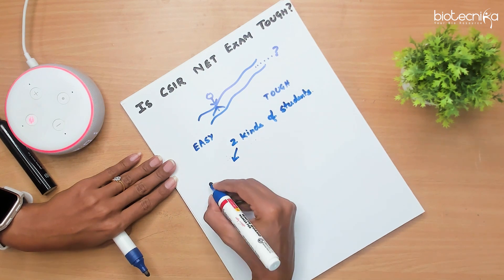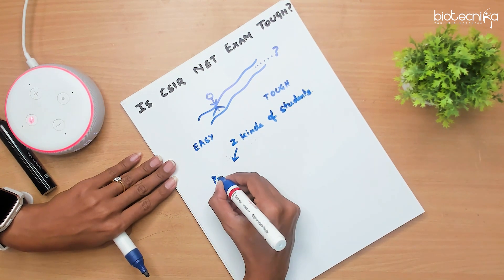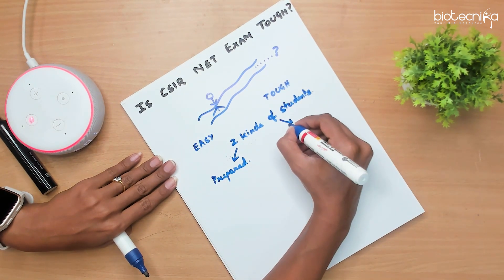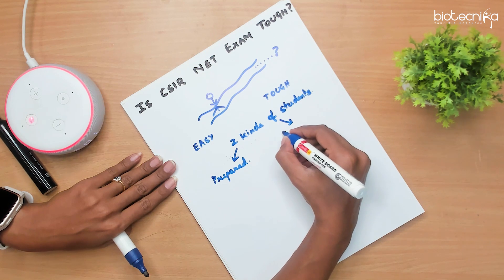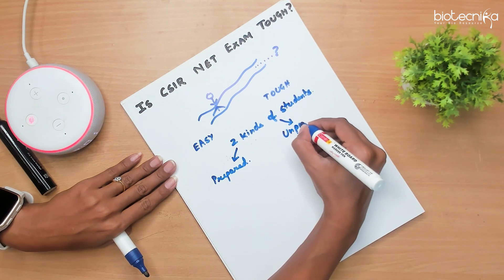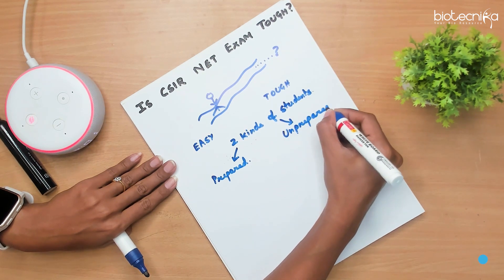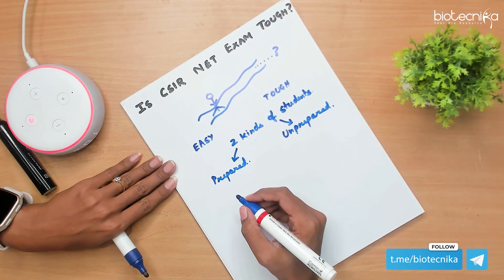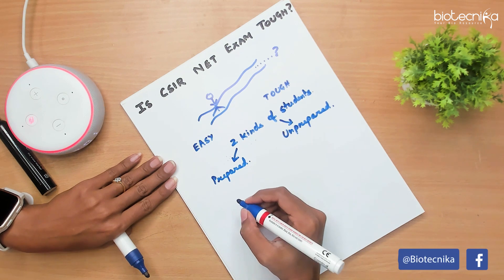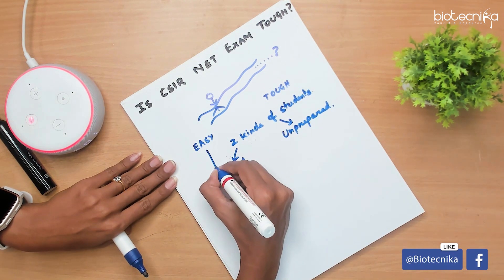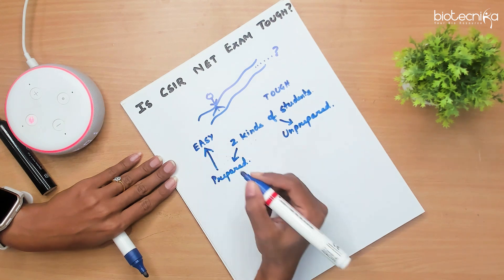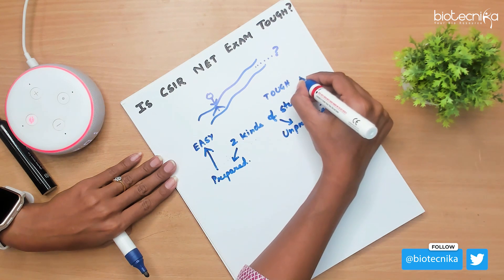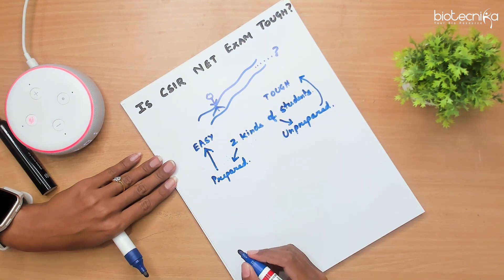The two kinds of students are the ones who are prepared - they know what to do, they have proper guidance and they have been dedicated and regular. Another set of students is the ones who are unprepared. They don't know what to do, they will haphazardly study, they don't have a plan, they don't have a proper strategy. So you can very well guess for the prepared students, it's going to be very easy. For the unprepared students, the CSIR exam is going to be very tough.